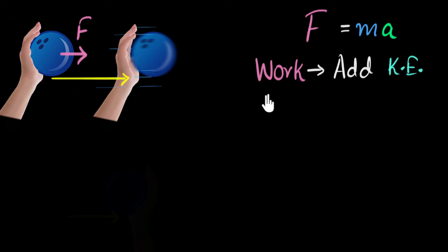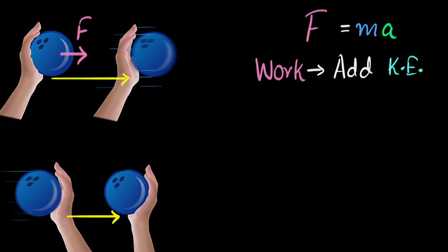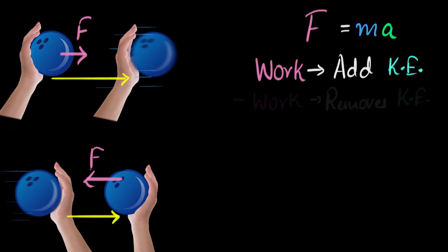You can also do work and remove kinetic energy. For example, imagine a ball is thrown at you and you try to catch it — your hand will move back a little bit. Your hand pushes the ball in the opposite direction, slowing it down. Because you're pushing it in the opposite direction to the displacement, work done is negative. And when you're doing negative work, the kinetic energy is reduced. So negative work removes kinetic energy from the body.